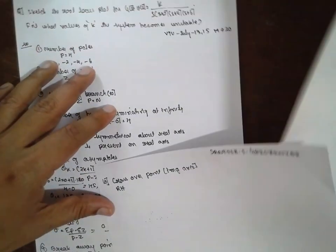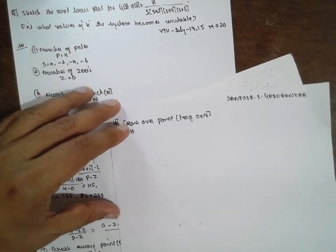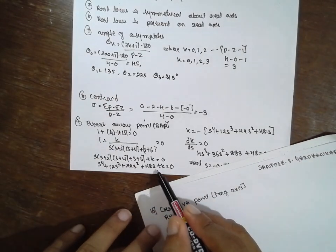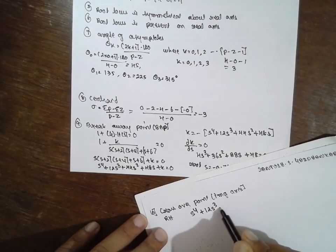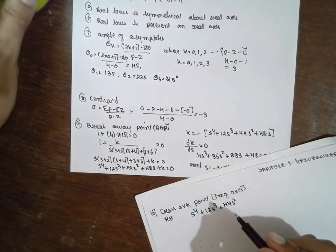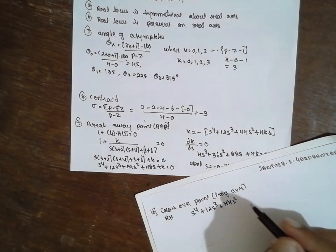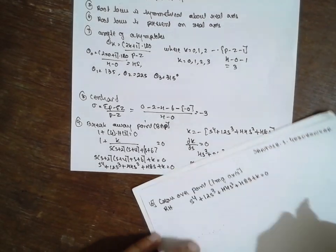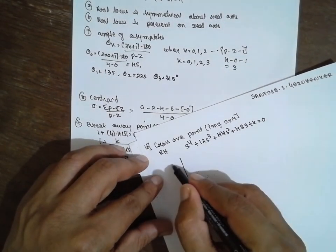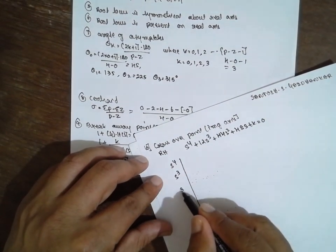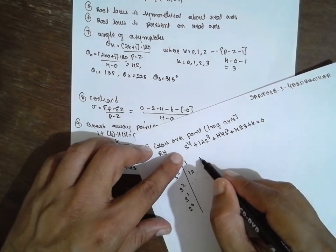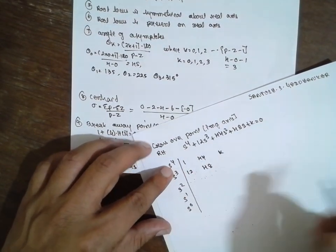Next, finding the crossover frequency using the Routh-Hurwitz criterion. Using the characteristic equation s⁴ + 12s³ + 44s² + 48s + K = 0, we set up the Routh array with rows s⁴, s³, s², s¹, s⁰ and coefficients 1, 12, 44, 48, and K.